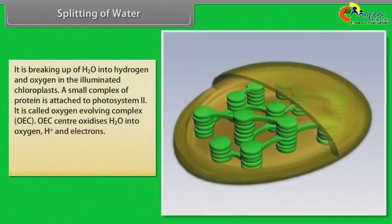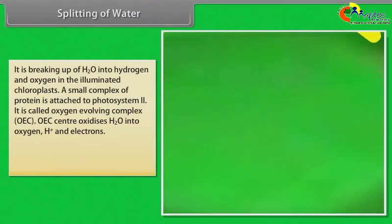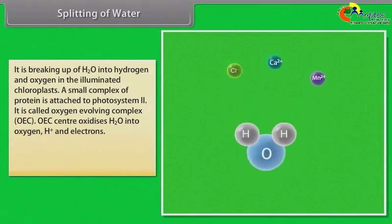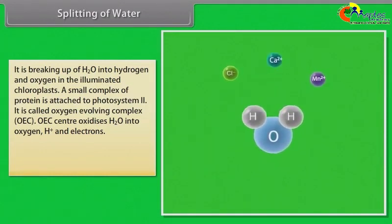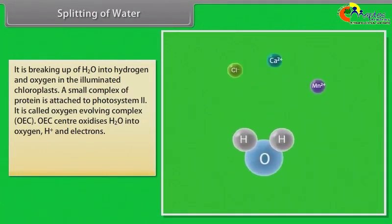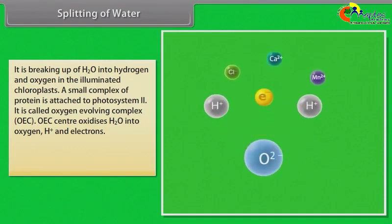Splitting of water is the breaking up of H2O into hydrogen and oxygen in the illuminated chloroplast. A small protein complex attached to photosystem 2, called the oxygen evolving complex or OEC, oxidizes H2O into oxygen, H+, and electrons. Cl-, Ca2+, and Mn2+ are required during this process.